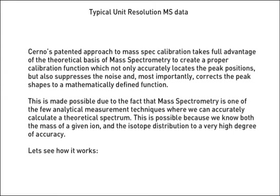This is made possible due to the fact that mass spectrometry is one of the few analytical measurement techniques where we can accurately calculate a theoretical spectrum. This is possible because we know both the mass of the given ion and the isotope distribution to a very high degree of accuracy.